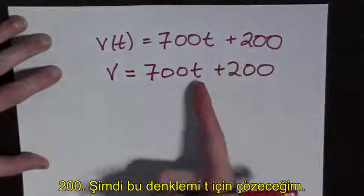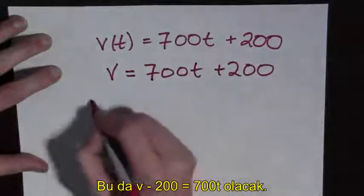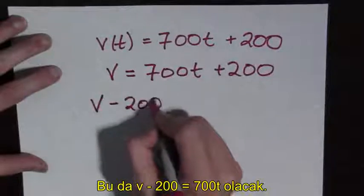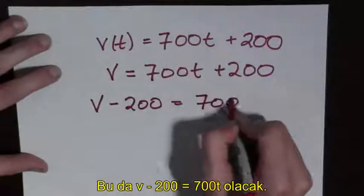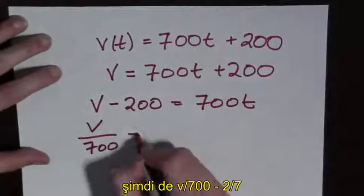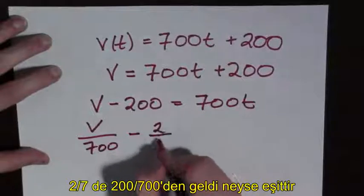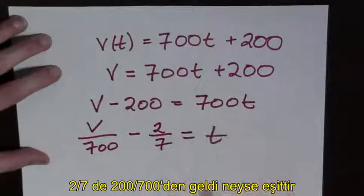And now I will solve for t. And so this is going to become v minus 200 equals 700t. And now it's v over 700 minus, what's 200 divided by 700? It's minus 2 sevenths is equal to t.